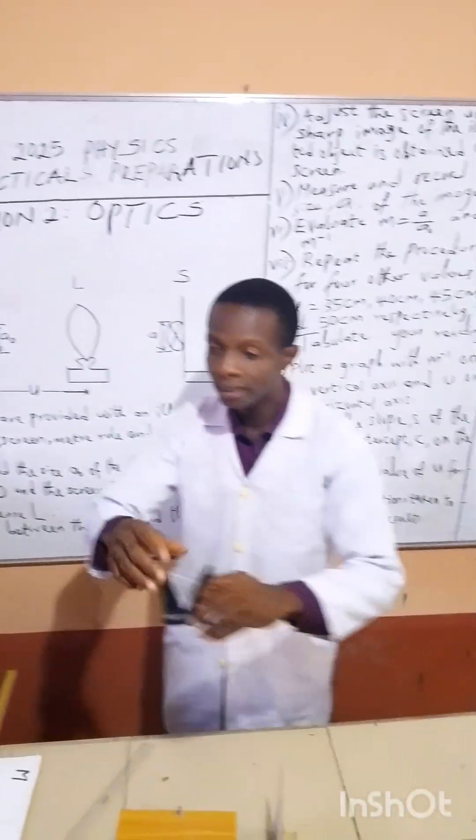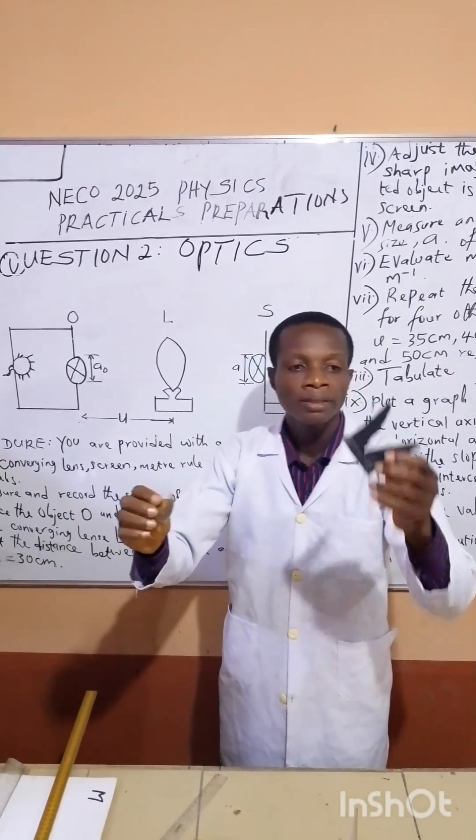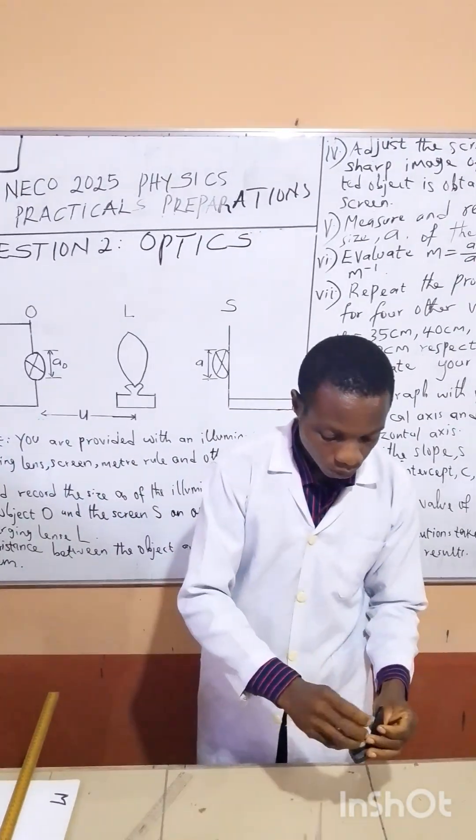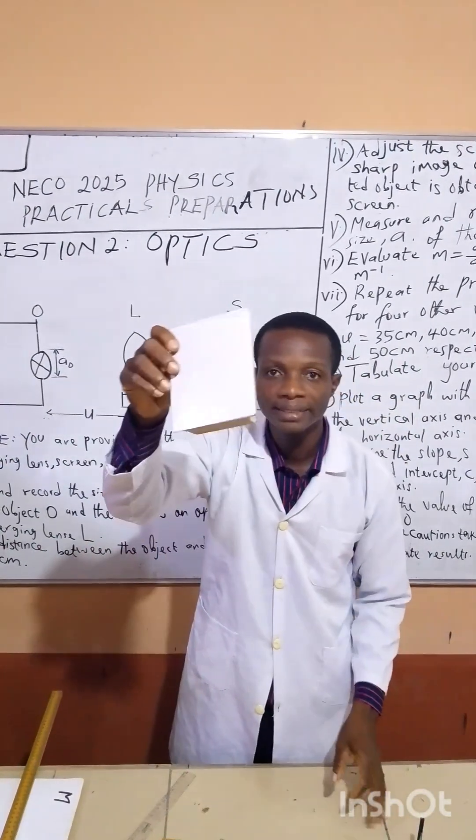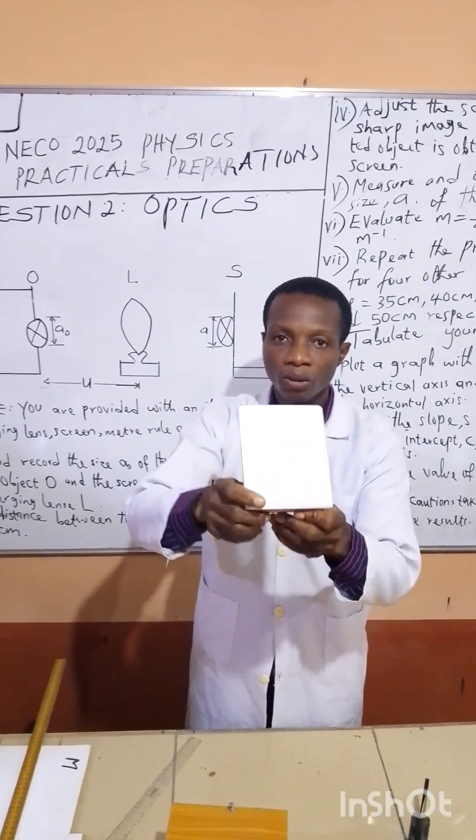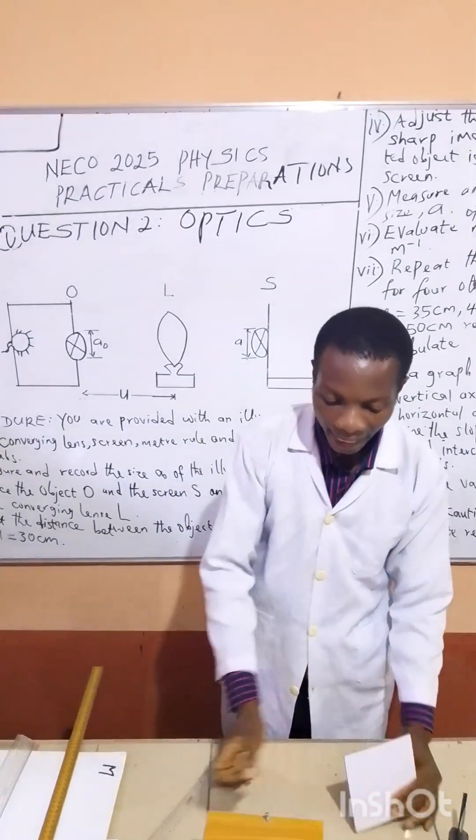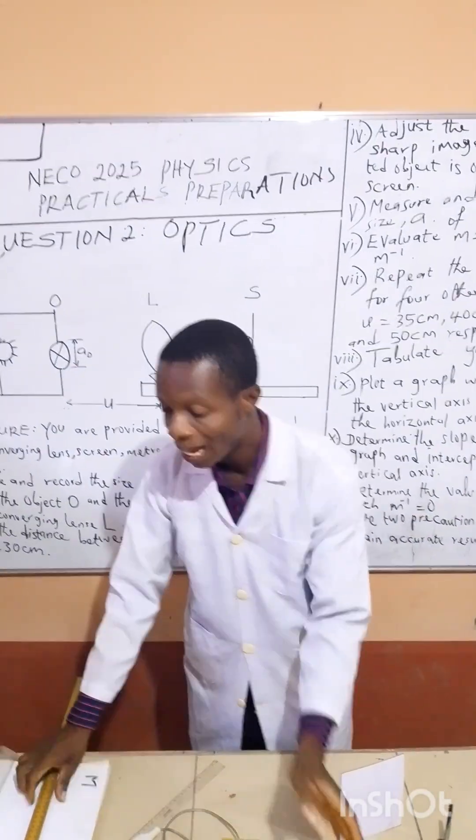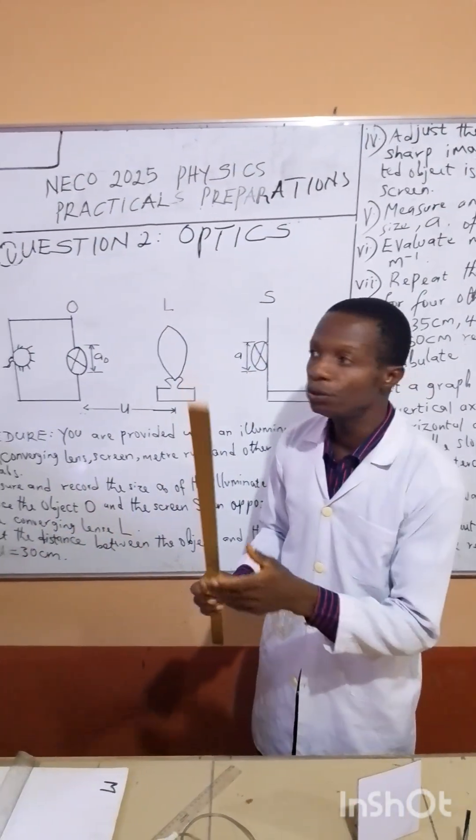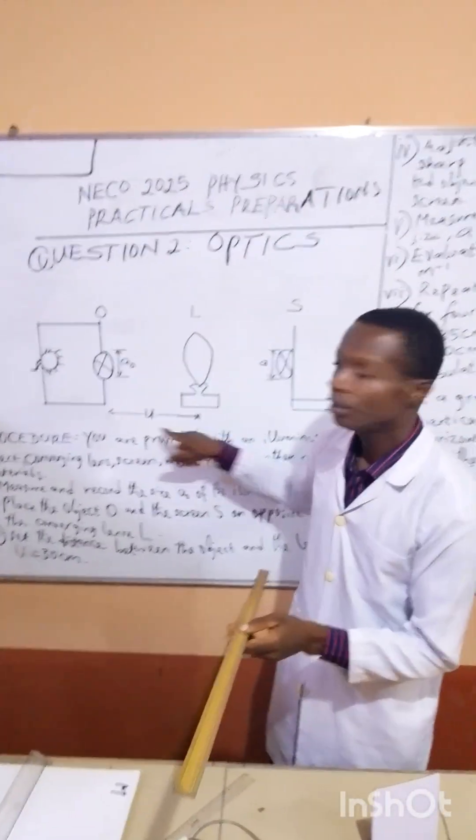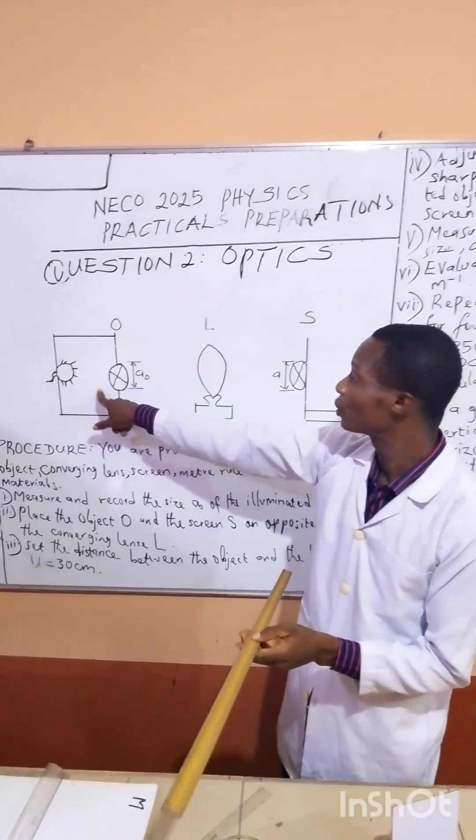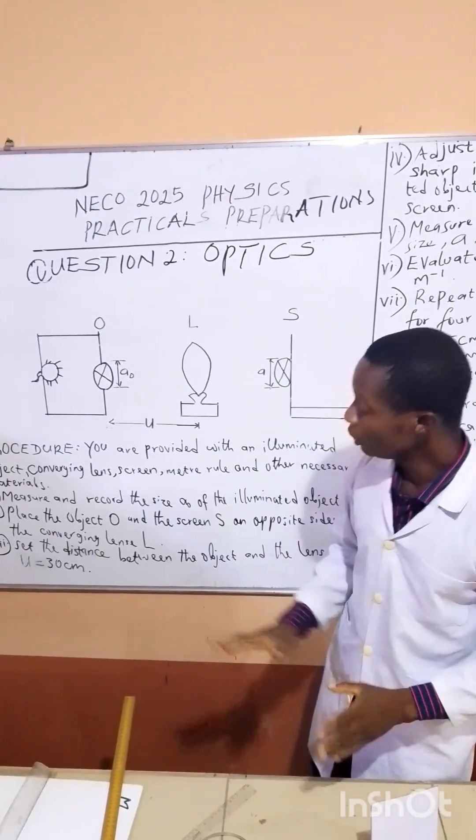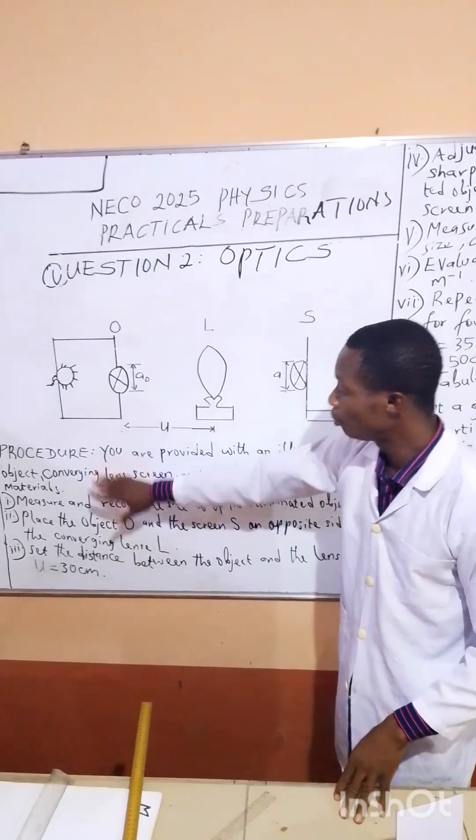This is the lens, this is the lens holder. These are the two tips we are giving, the screen and the ray box. Then we have the ruler. The ruler will be used to measure the distance, the distance between the ray box and the lens. That's what we call U here. Now the instruction is quite simple here.